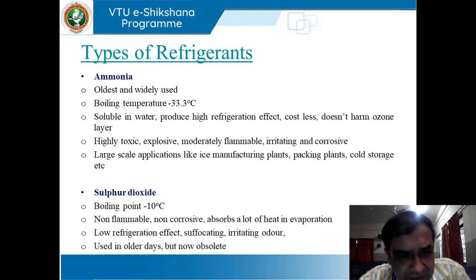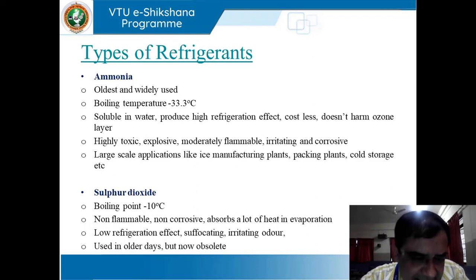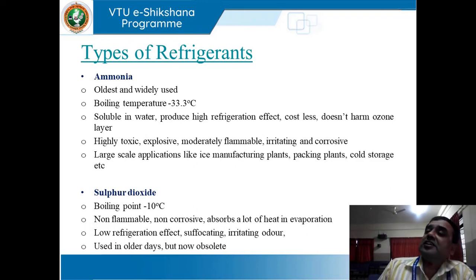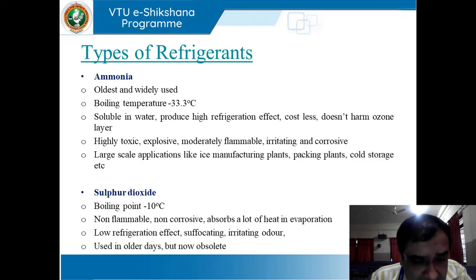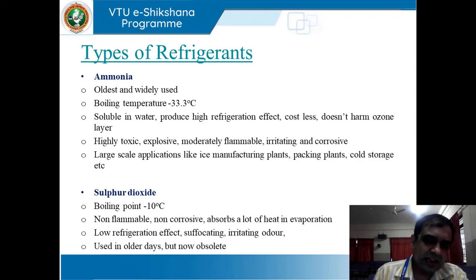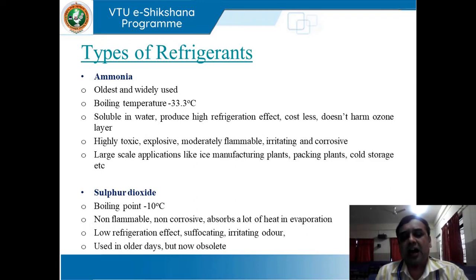When we come to types of refrigerants, we have ammonia — the oldest and most widely used. Its boiling point temperature is minus 33.3 degrees centigrade. It is soluble in water, produces a high refrigeration effect, is costless, and does not harm the ozone layer — which is very important. However, it is highly toxic, explosive, moderately flammable, irritating, and corrosive. It is used for large-scale applications like ice manufacturing plants, packing plants, and cold storage.